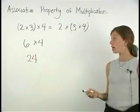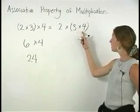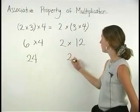On the right side, we again simplify within the parentheses. 3 times 4 is 12, and 2 times 12 is 24.